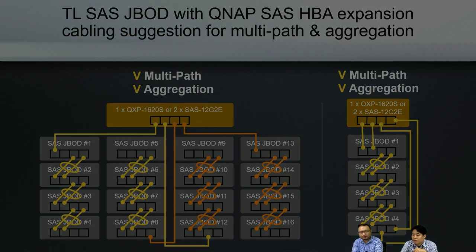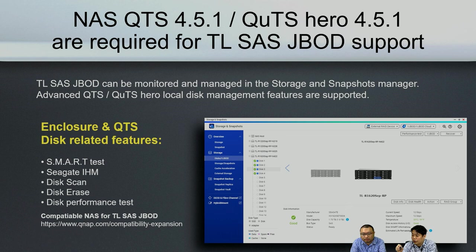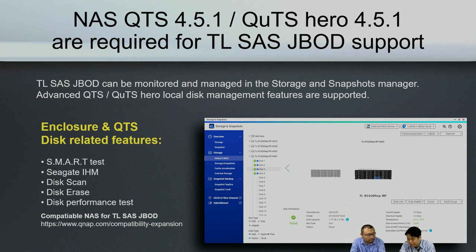To support this new SAS J-Bar, you need to upgrade your system to QTS 4.4.5.1 or QTS Hero 4.4.5.1. Then in Storage & Snapshot Manager you can easily manage the host NAS and your enclosures. You can check detailed status, disk SMART information, and features like Seagate IronWolf technology. You can do disk scans, erase, and performance tests — basically all advanced disk features that can be performed on the NAS can also be performed on the J-Bar. Be sure to check the compatibility link to see which NAS models are supported.